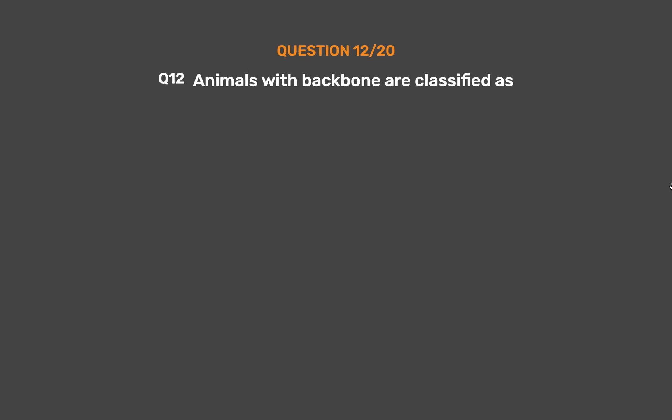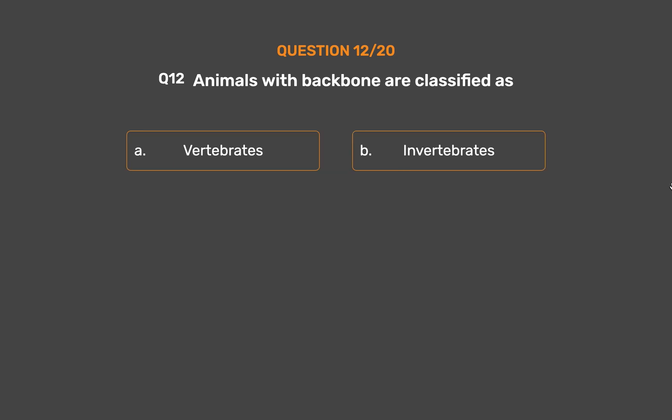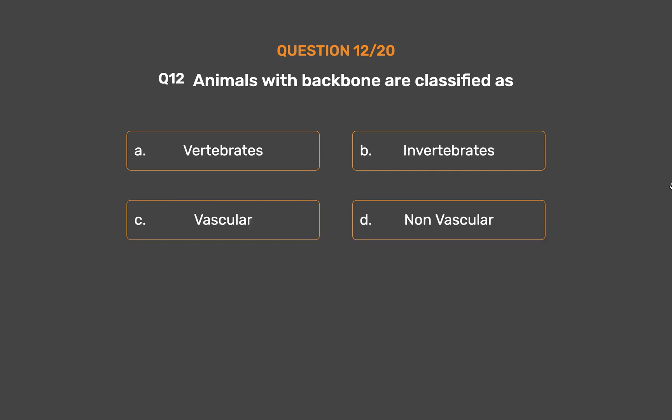Question number 12. Animals with backbone are classified as? Option A: Vertebrates. Option B: Invertebrates. Option C: Vascular. Option D: Non-vascular.